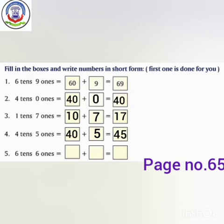Number 5 — how many 10s do we have? We have 6 tens. How many 1s do we have? We have 6 ones. We put 0 after 6 and it becomes 60. 60 plus 6 equals 66.